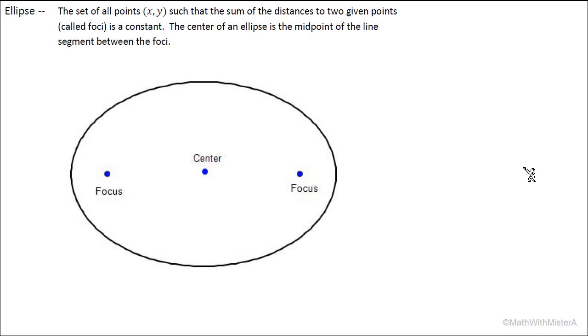The ellipse is defined as the set of all points such that the sum of the distances to two given points, called foci, is a constant. The center of an ellipse is the midpoint of the line segment between the foci.